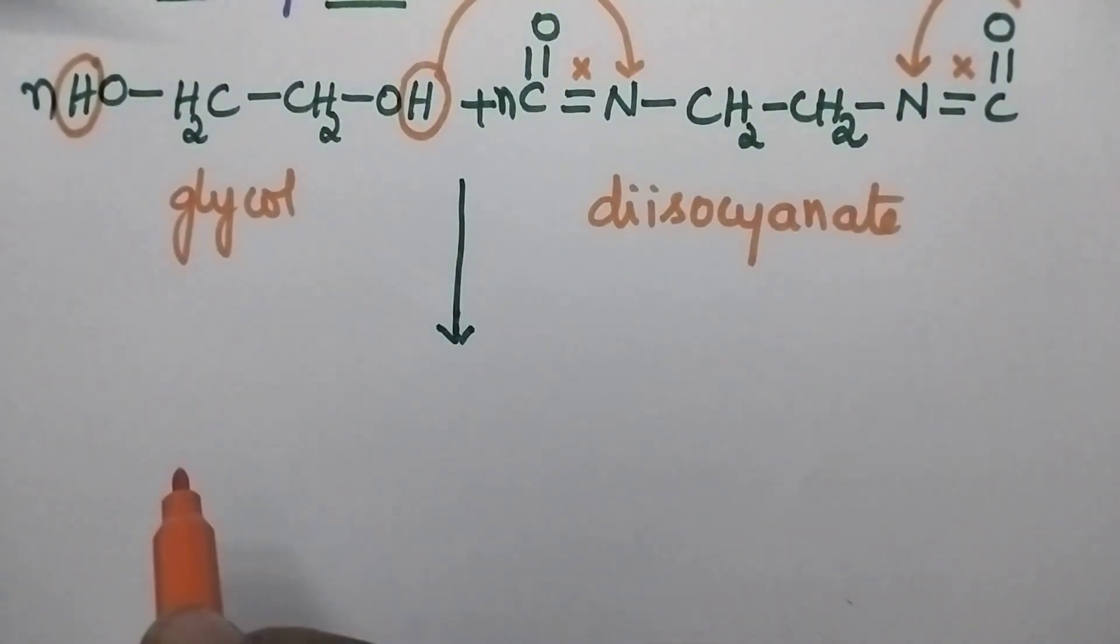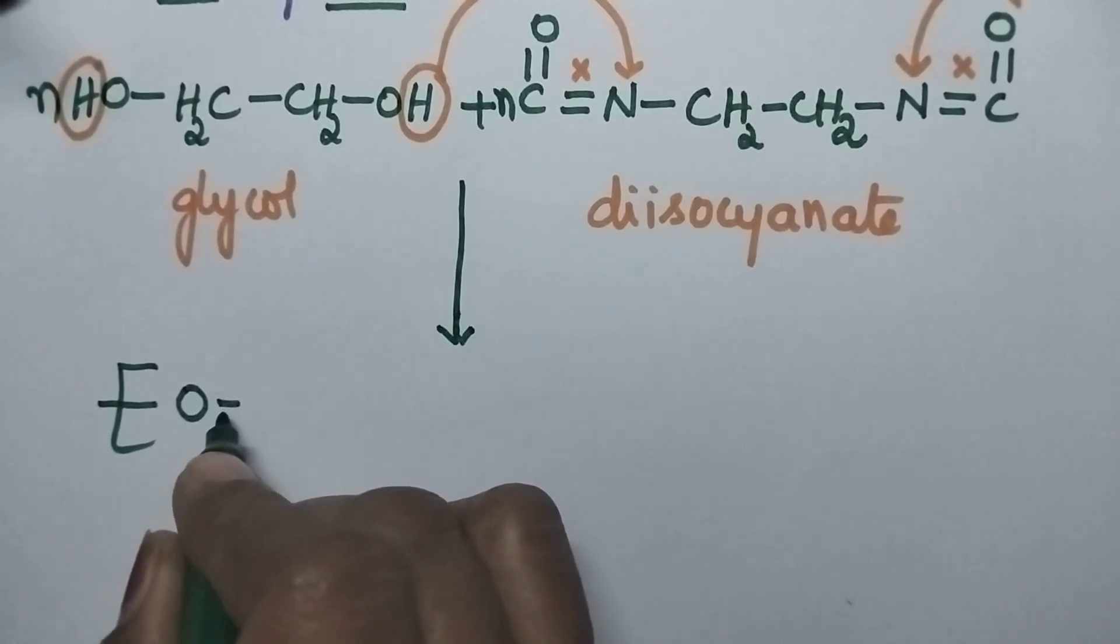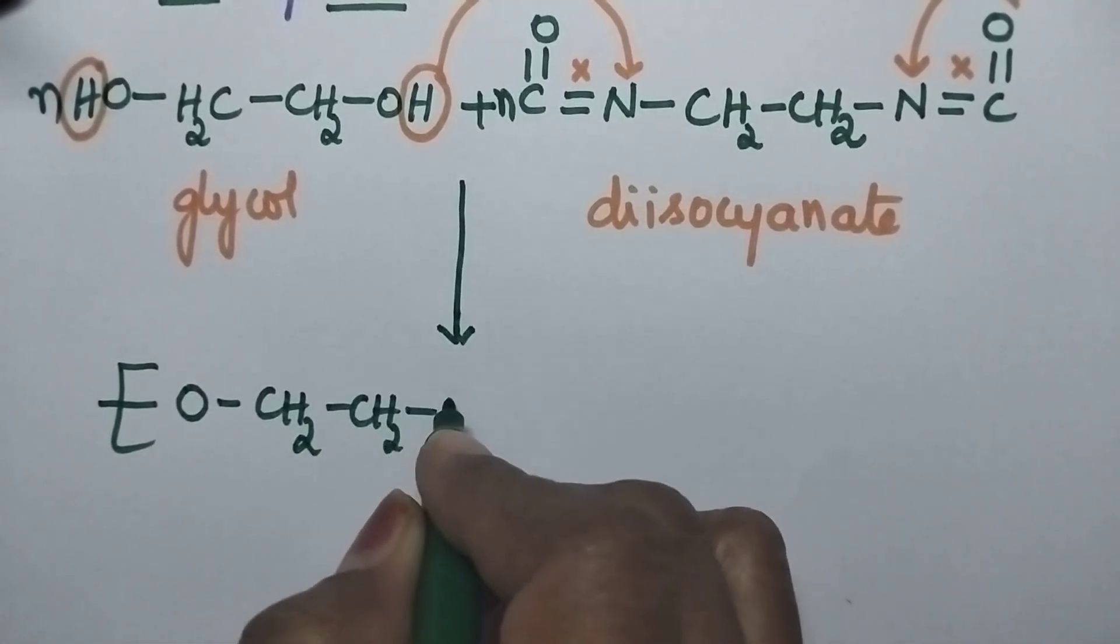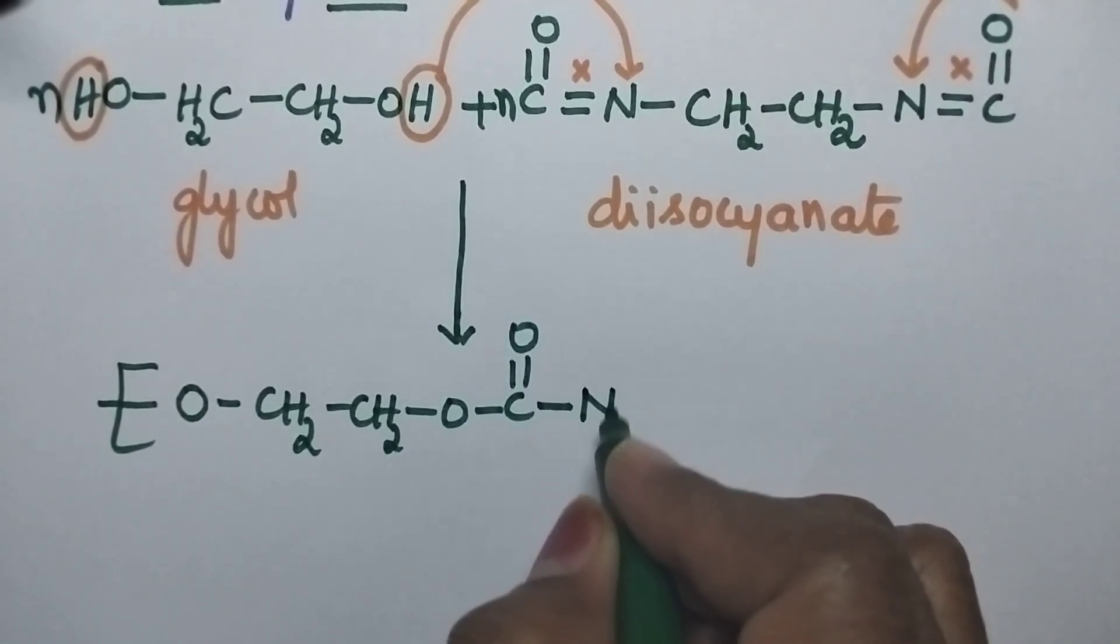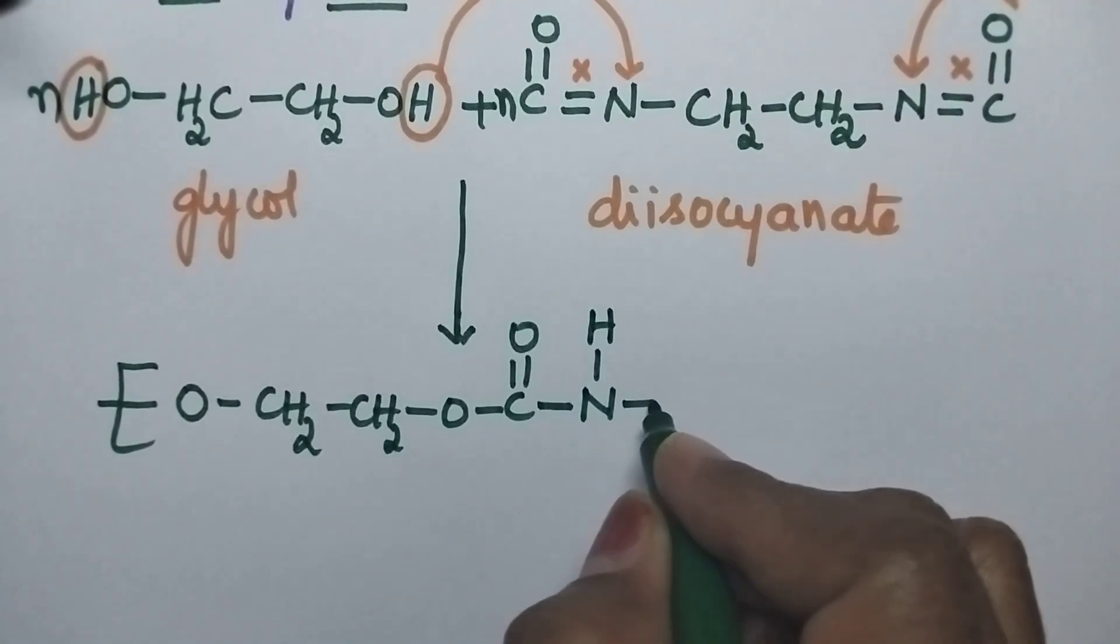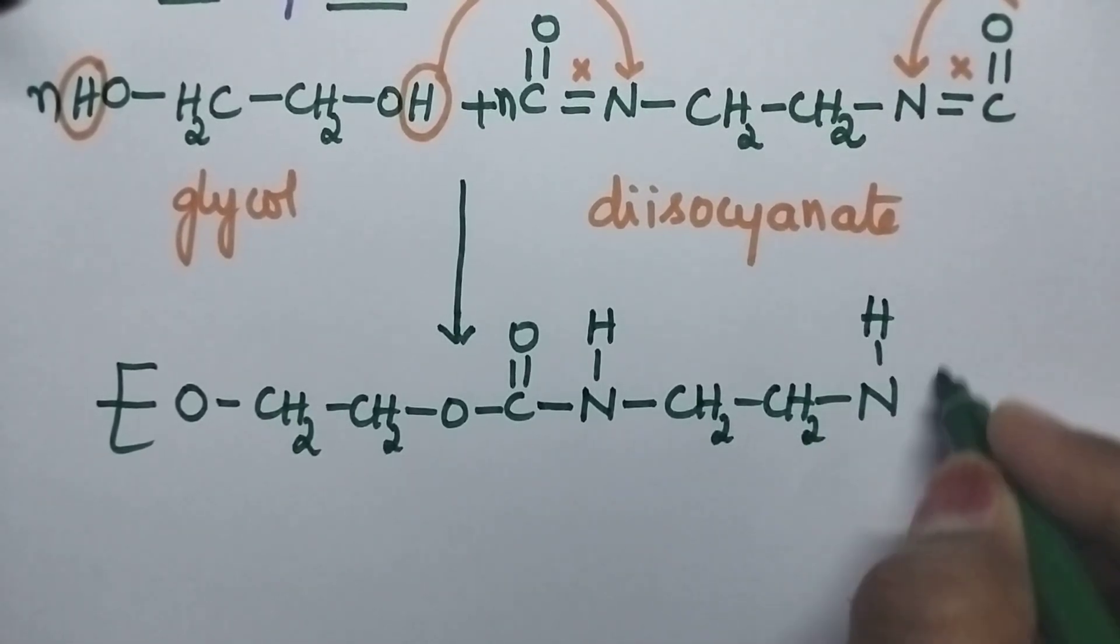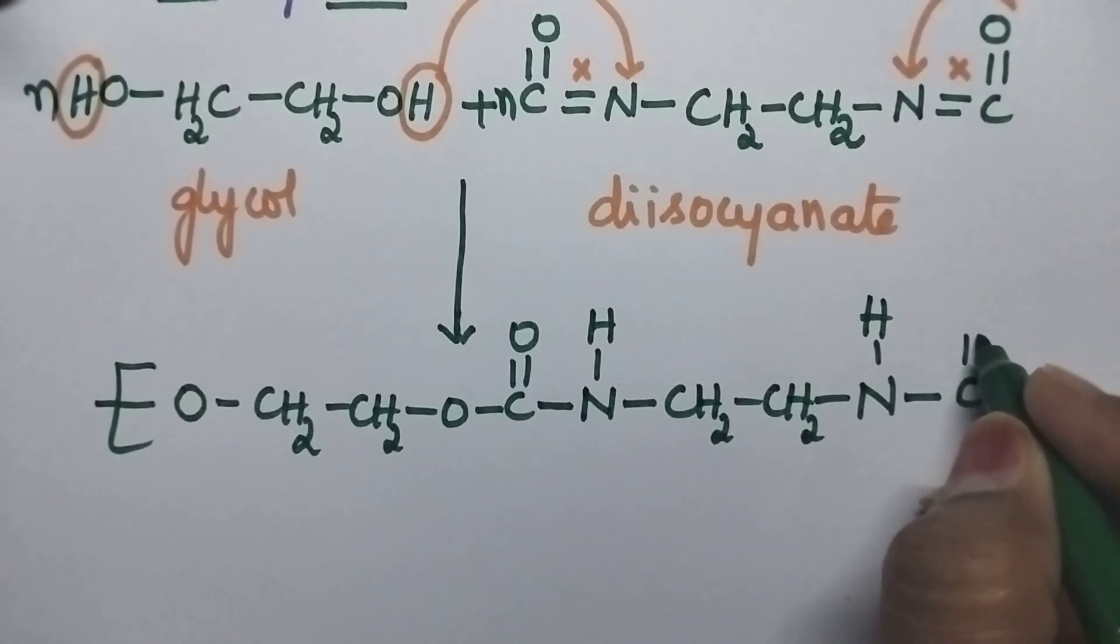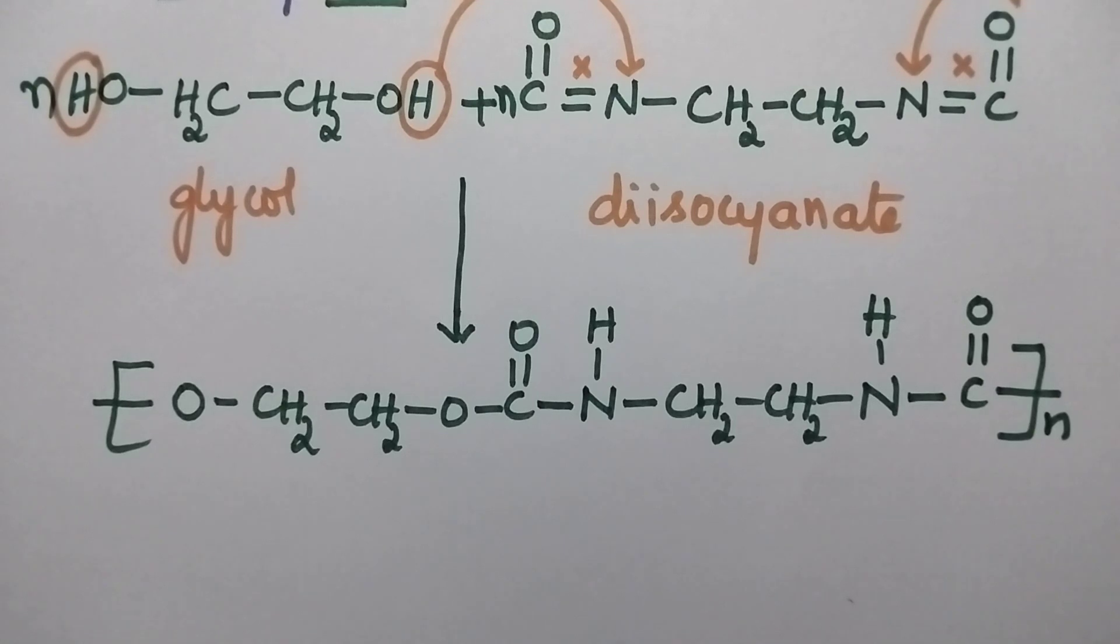After rearrangement, it results in the formation of polyurethane and its structure can be represented as OCH2CH2O single bond C double bond O, on nitrogen hydrogen will be present, CH2CH2, again on nitrogen hydrogen will be present. Here a single bond is present, then single bond C double bond O. The same structure will be repeated N number of times.